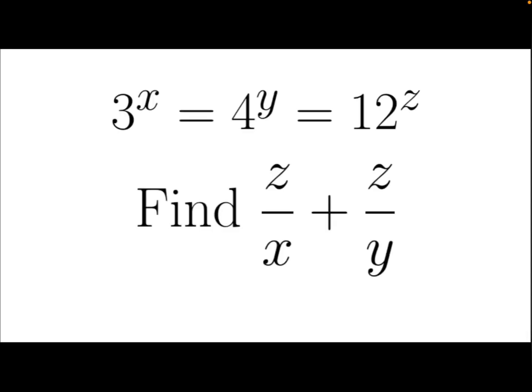Let's take a look at this problem. We are given that 3 to the power of x equals 4 to the power of y equals 12 to the power of z. Find the value of z over x plus z over y.